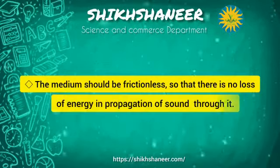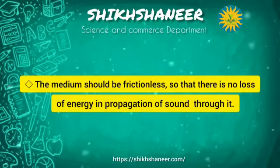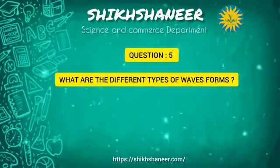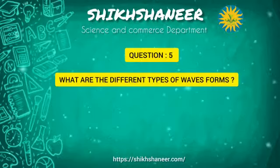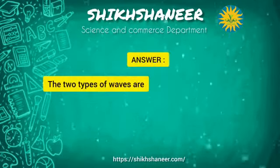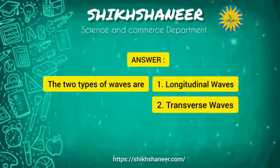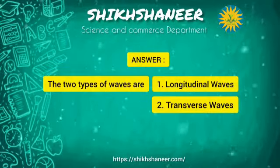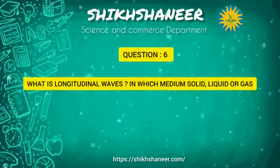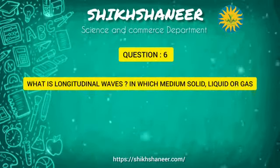Third, the medium should be frictionless so that there is no loss of energy in the propagation of sound through it. Next, what are the different types of wave forms? The two types of waves are longitudinal waves and transverse waves.